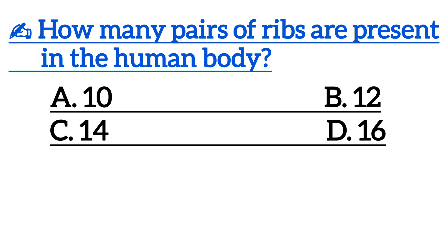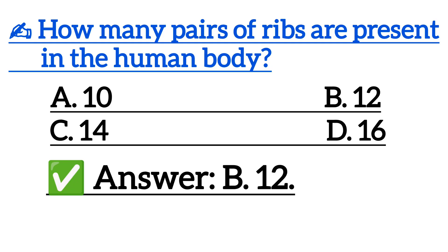How many pairs of ribs are present in the human body? Correct answer is option B: 12 pairs.